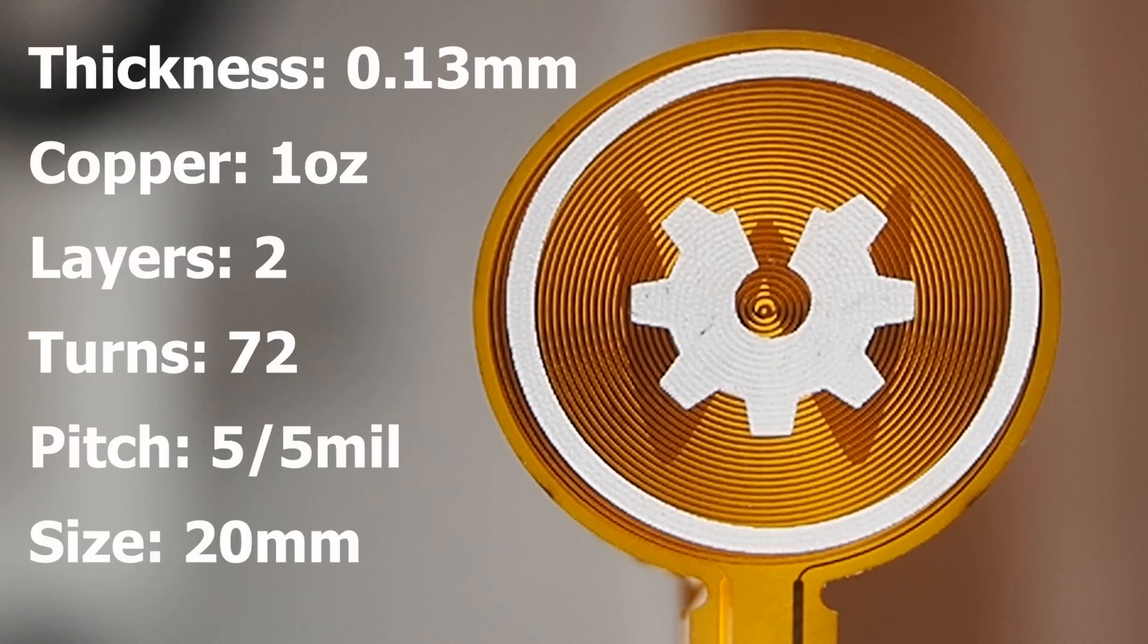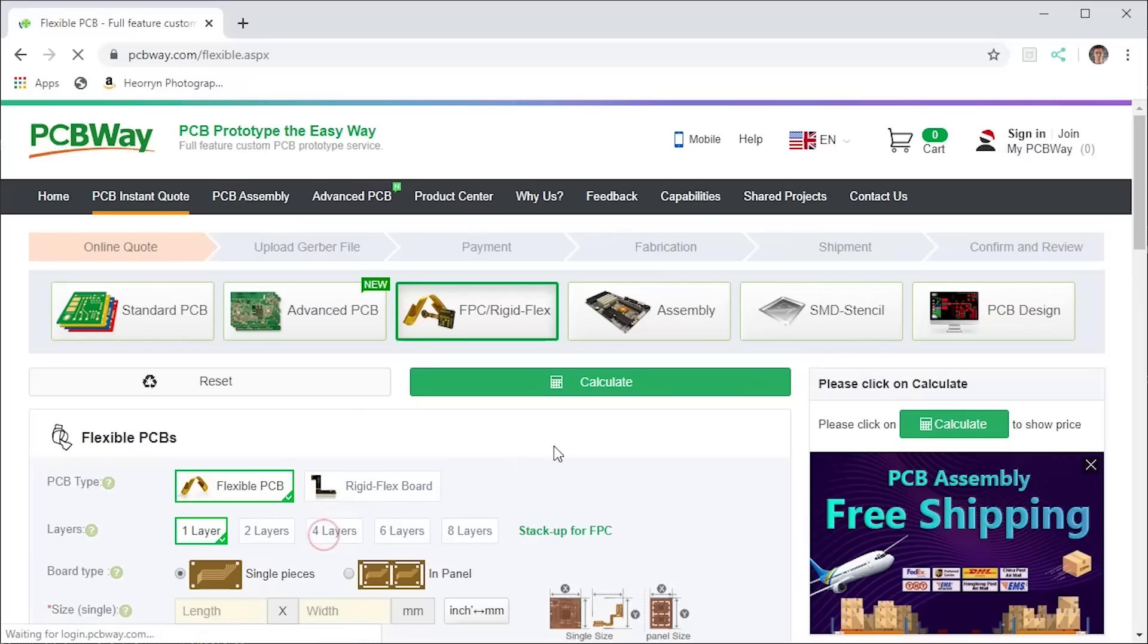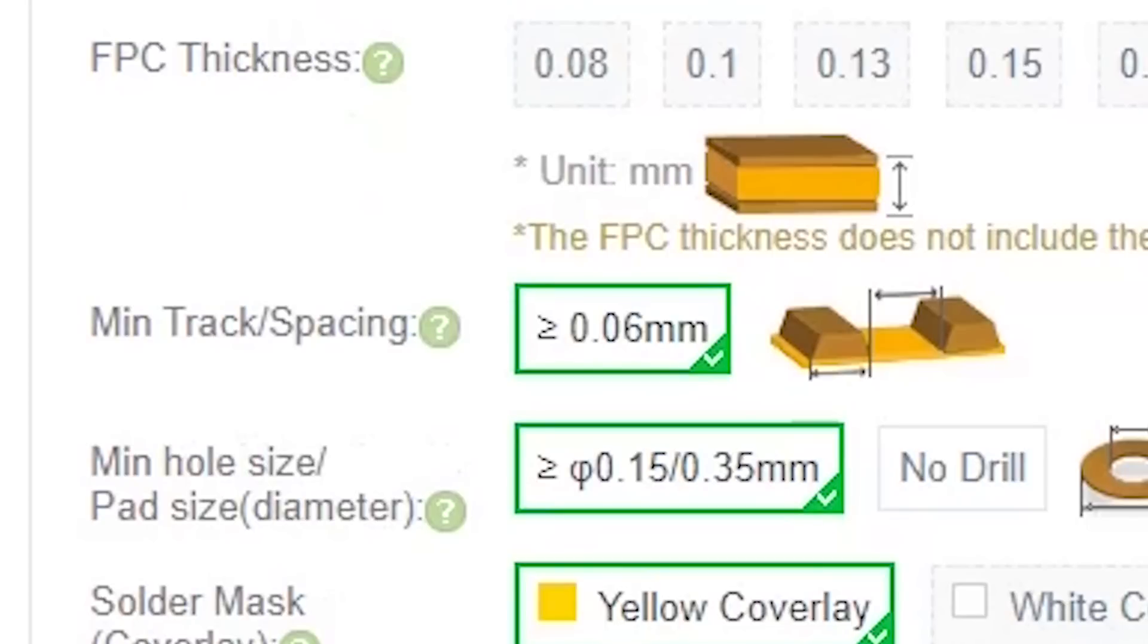The first thing that can make our coil smaller here is the pitch. This design is now 2 years old and since then PCBWay has improved their limits. Their website says that they can manufacture a clearance of 0.06mm without any extra cost.